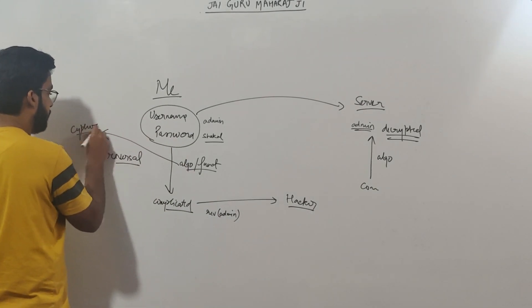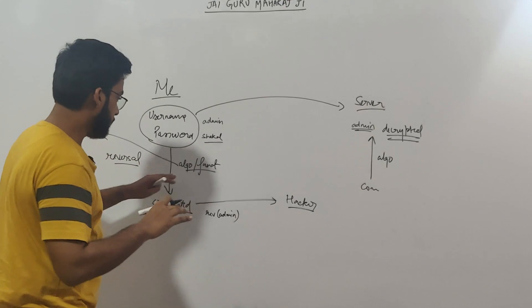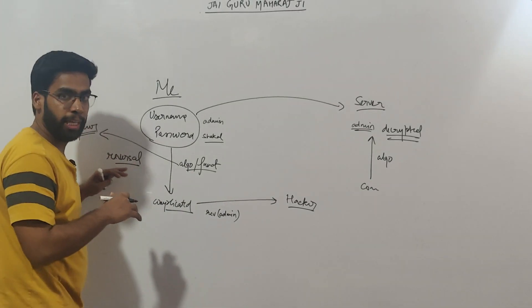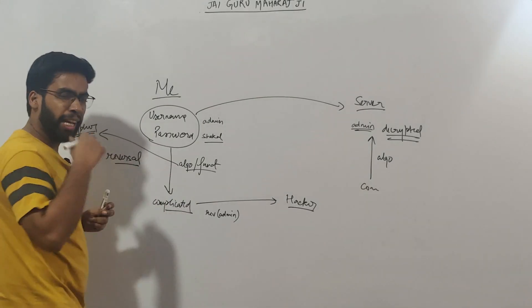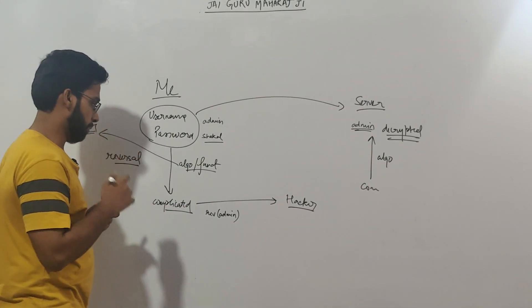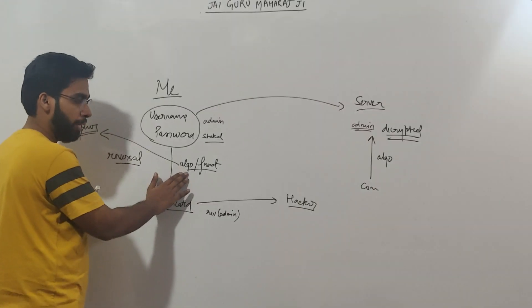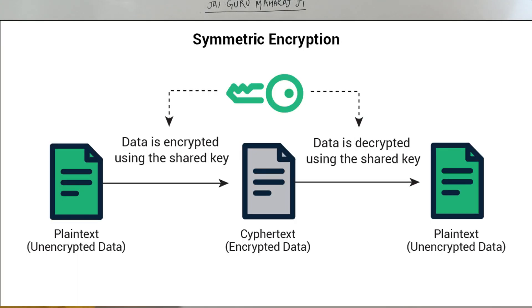This is the cipher that I was talking about. This cipher can be any mathematical function or any algorithm. For simplicity I have used reversal. But it could be any complex algorithm. Right? Now this method, where I use the same algorithm for encryption and decryption, is known as symmetric cipher. Because I am using the same algorithm at both sides. Now there is a problem with this.